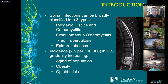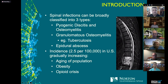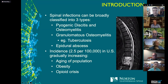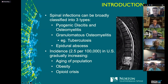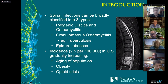In much of the emerging world, granulomatous osteomyelitis, especially from TB, is very common. Epidural abscesses are also something we see a lot of here, often associated with pyogenic osteomyelitis. The incidence overall in the US is about 2.5 per 100,000, but it's been gradually increasing due to trends such as the aging population, the obesity epidemic, and the opioid crisis. Here in Kentucky we're in the center of that — efforts to decrease prescription opioid use have led to a spike in IV heroin use, so we're seeing a lot more osteomyelitis because of that.